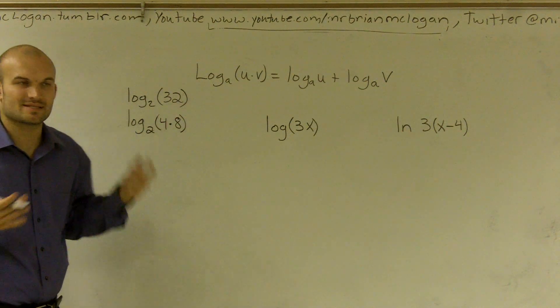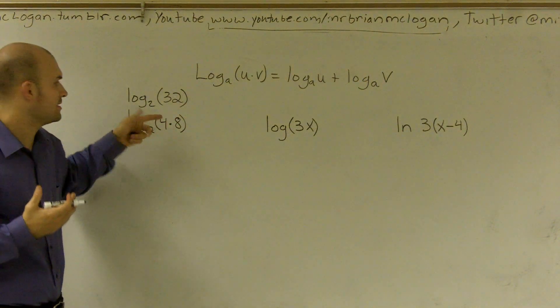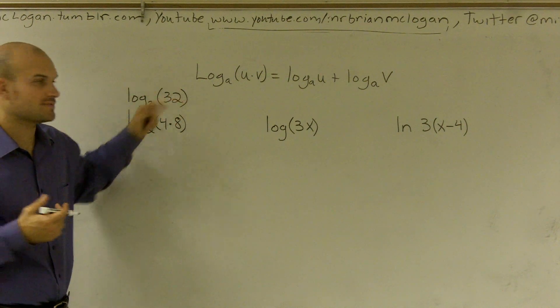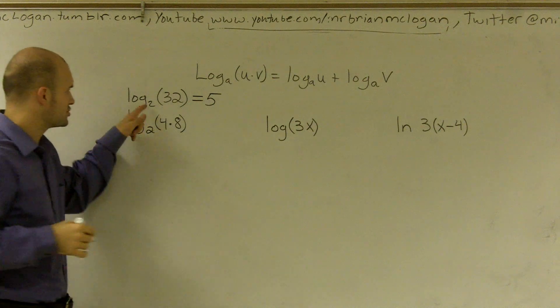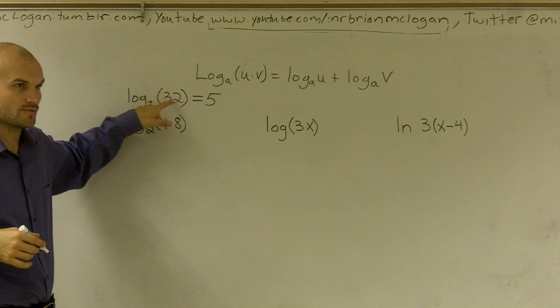So, 2 raised to what power gives me 32? The answer is 5 because 2 raised to the 5th power gives me 32.